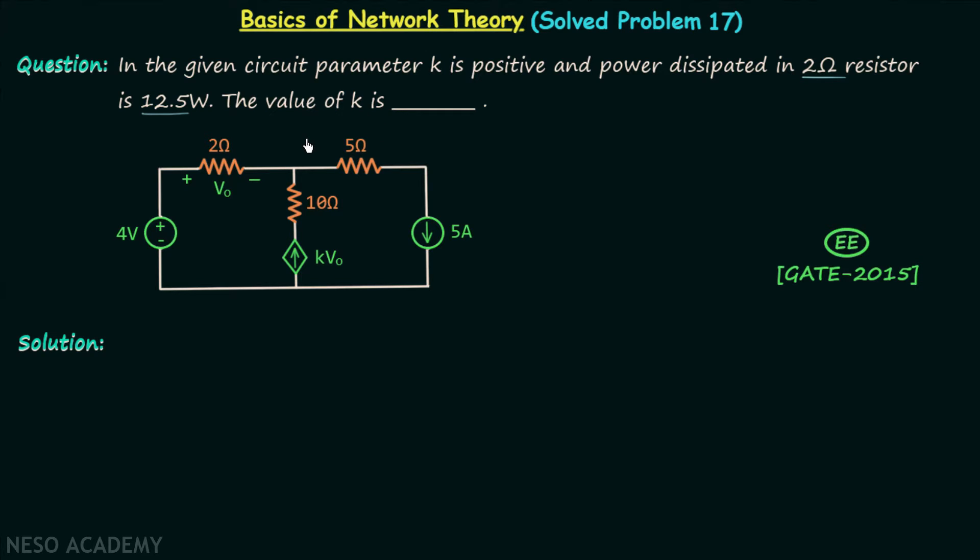So we are required to calculate the value of parameter k in this network. When you focus on this particular node, you will find three branches are connected at this node.